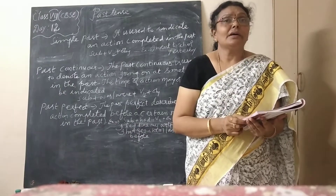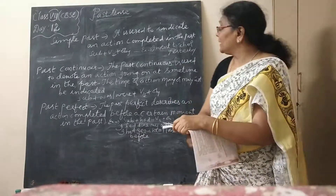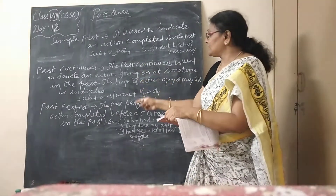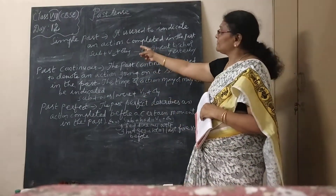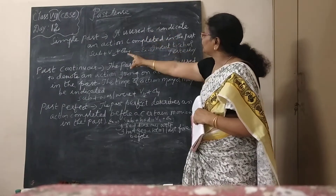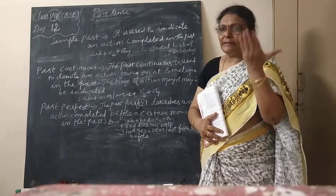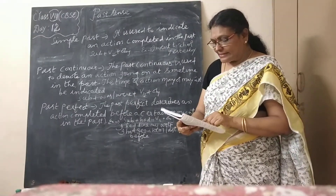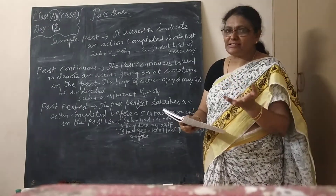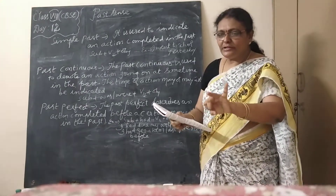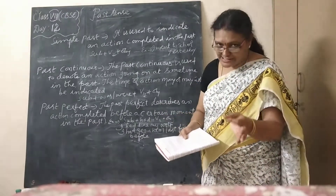Today I have taught you about simple past, past continuous, and past perfect. Once again — simple past tense is used to indicate an action completed in the past. For example, 'When I reached the station' — 'reached' is the past tense, V2 form. So 'when I reached the station' means that action has already been completed in the past.